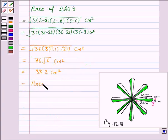So area of 1 triangular tile is equal to 88.2 cm².